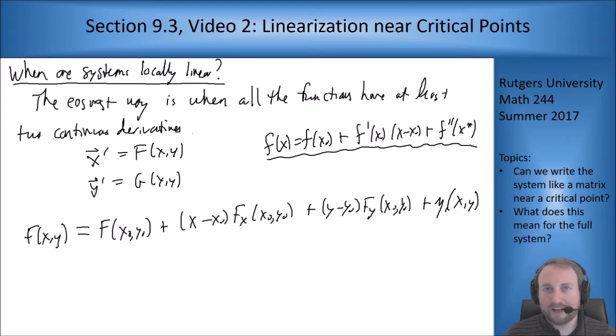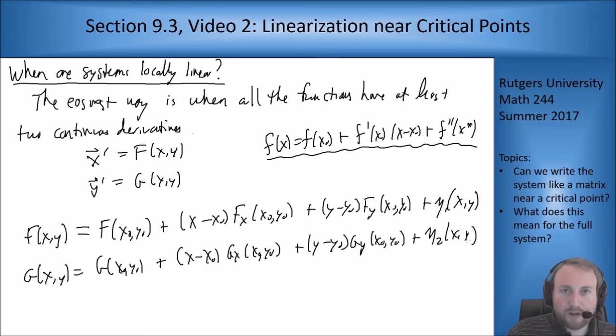Similarly I get g(x,y) equals this in terms of the same process. Now I want to assume that (x₀,y₀) is a critical point. What does that mean?